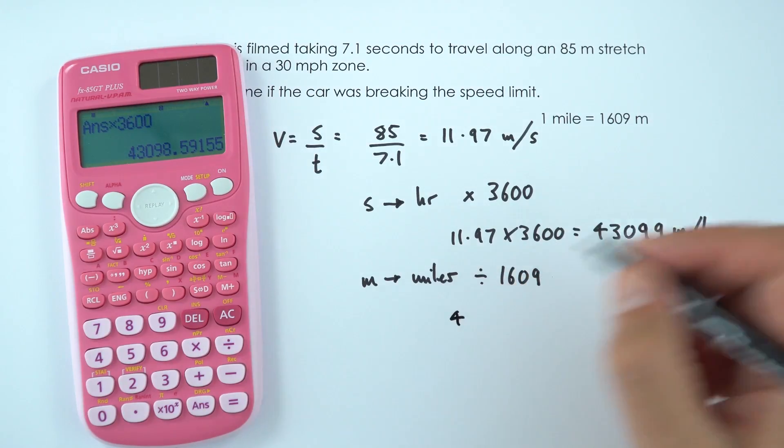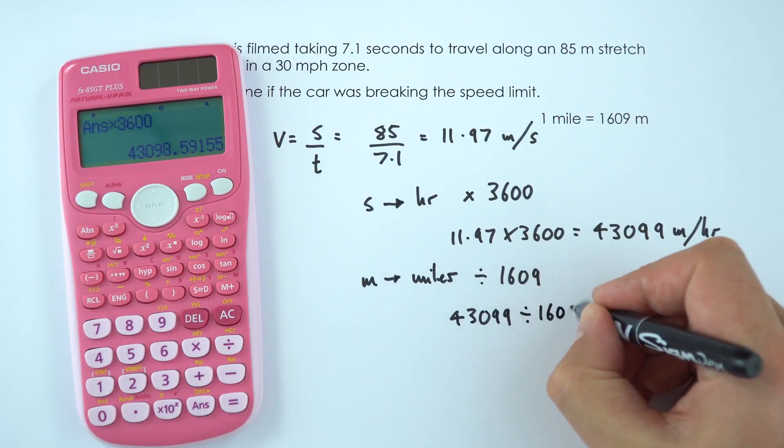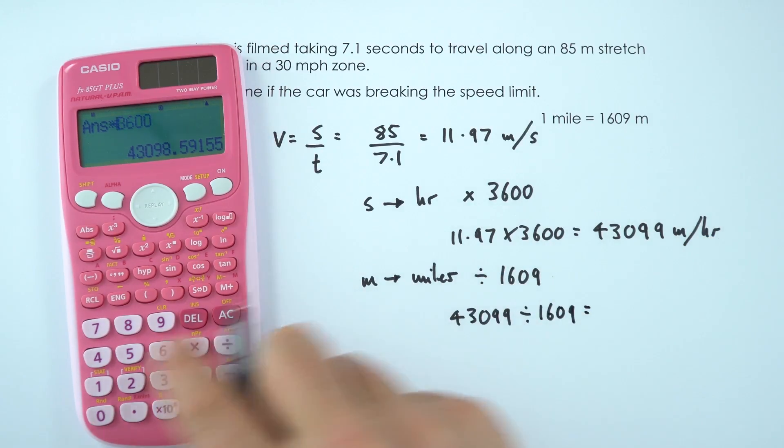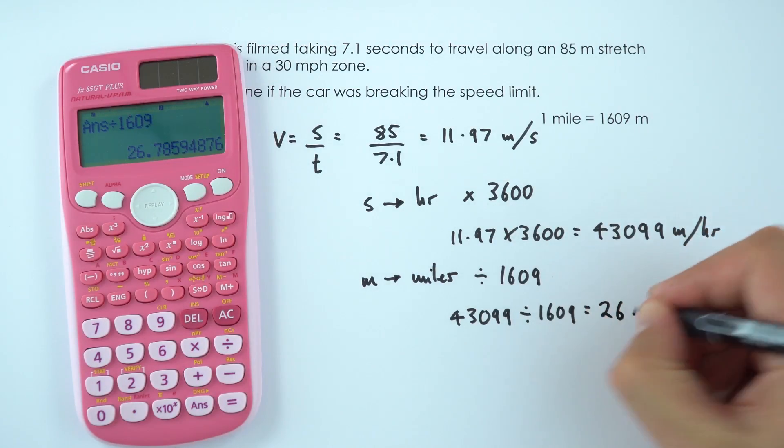So again, the previous answer, 43,099 divided by 1609, gives us a value of 26.8.